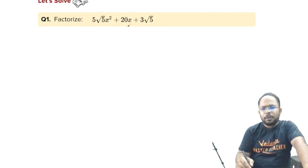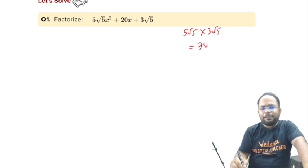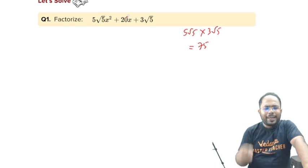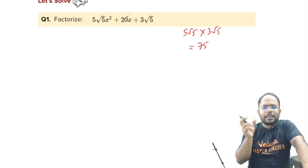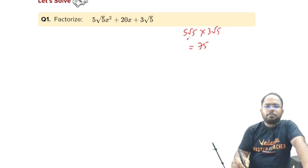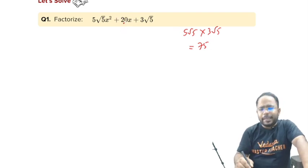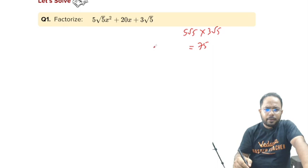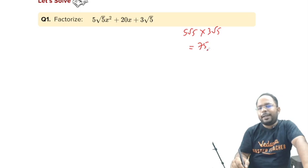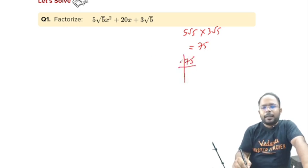For doing the middle term, we have to think of this product of 5√5 and 3√5 is 75. Now, we have to think that 20, the middle term has to be split in such a way that if we take that two numbers, we will get the product as 75. And if we add them, we get 20 as a number. We can take the LCM of 75. It gives us 5, 5, and 3.